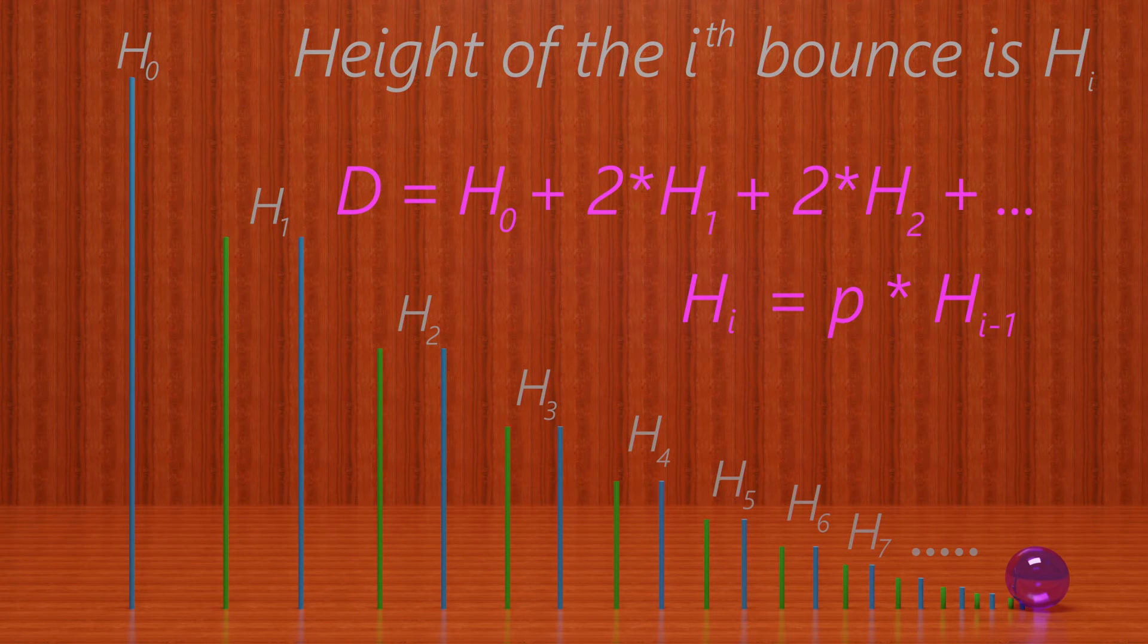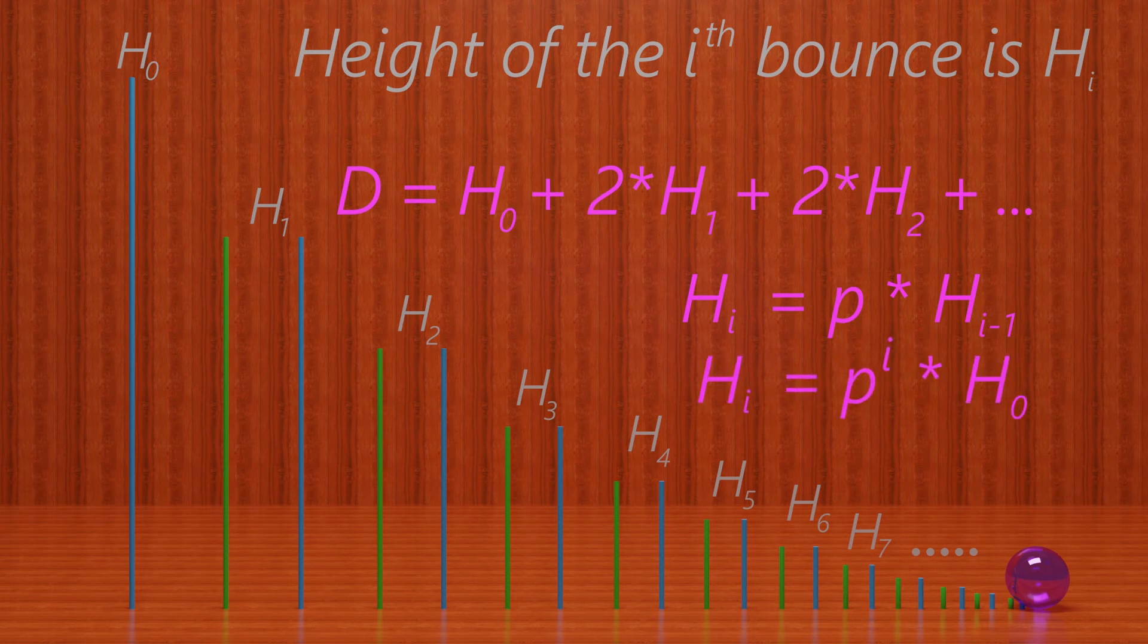Thus we can get that H1 is p times H0. H2 is equal to p times H1, which is equal to p times p times H0, which is p squared times H0. In general, we can write Hi as p to the i times H0.